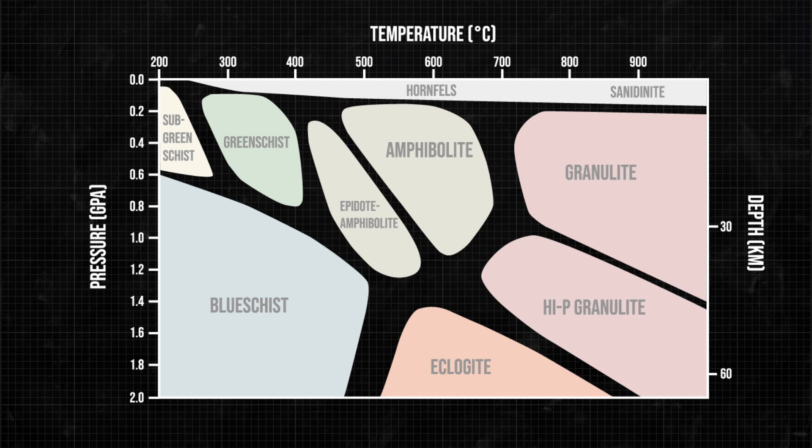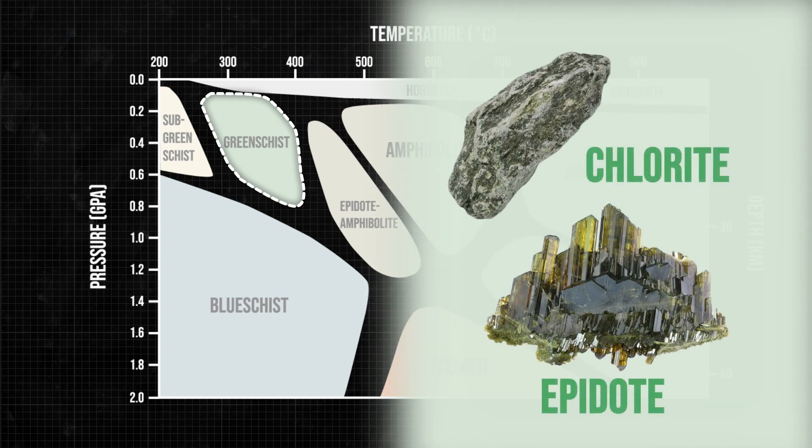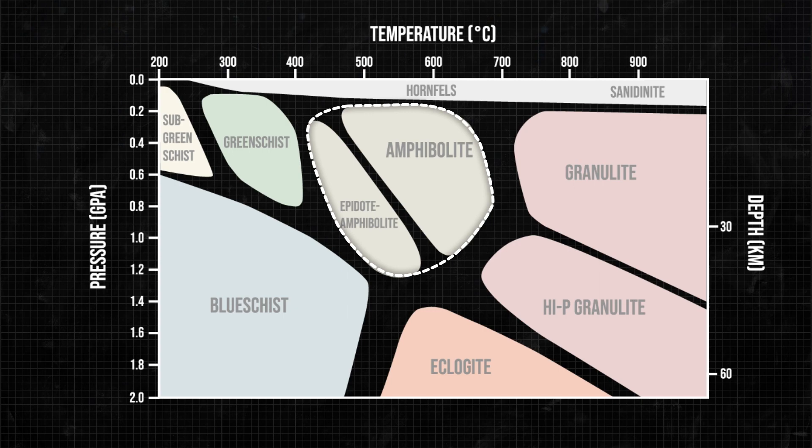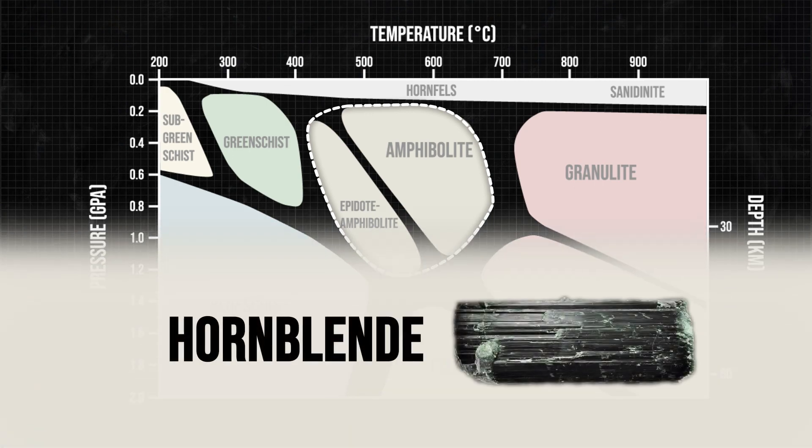The names of metamorphic facies sometimes tell you what minerals can be found in a rock metamorphosed under the various conditions. For example, greenschist facies metamorphic rocks contain green minerals, like chlorite and epidote, while amphibolite facies rocks generally include black hornblende.